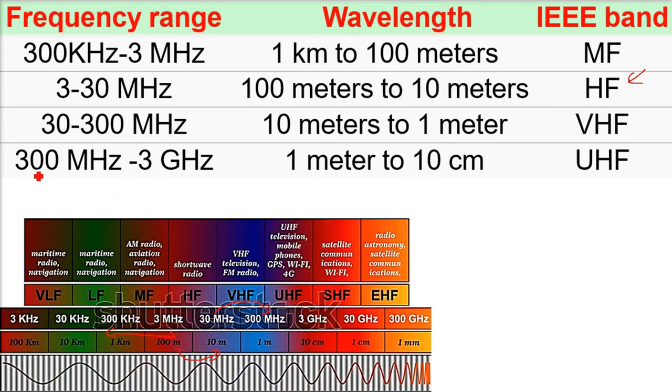Then 300 megahertz to 3 gigahertz, this goes from 1 meter to 10 centimeter. This is ultra high frequency. UHF television, mobile phone, GPS, Wi-Fi, 4G.